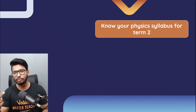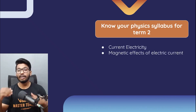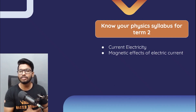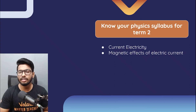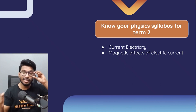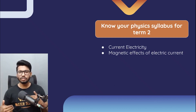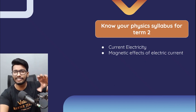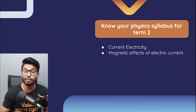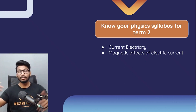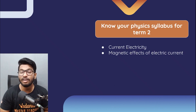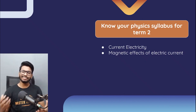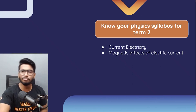The first thing you need to know is your syllabus for physics. You have two chapters: electricity and magnetic effect of electric current. Know the types of numericals expected, the theory stressed in past years, and all the formulas. The majority of numericals will come from electricity — magnetic effect has little to no numericals. It's more about hand rules, symbols, and working of motors — so more theory, less math.